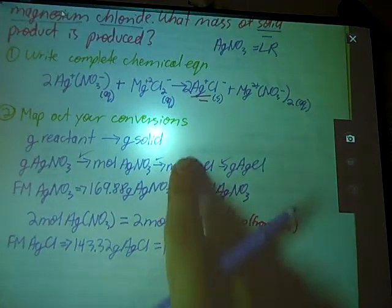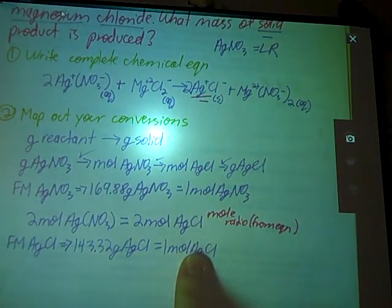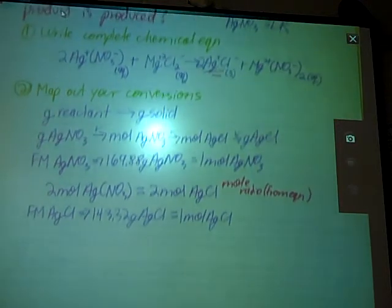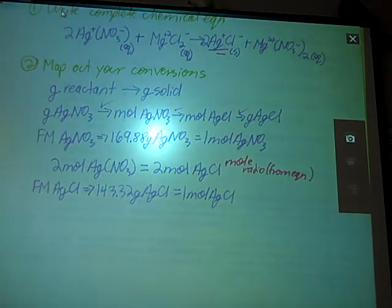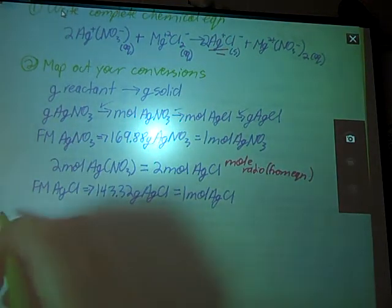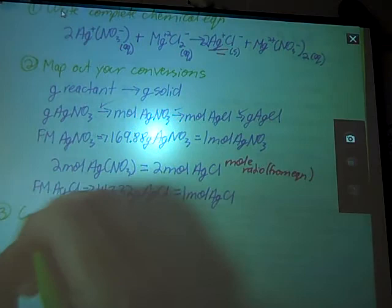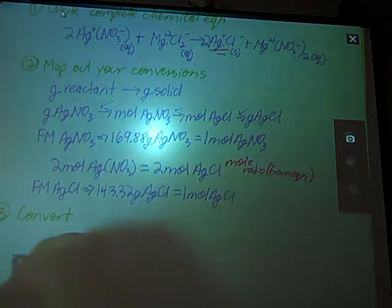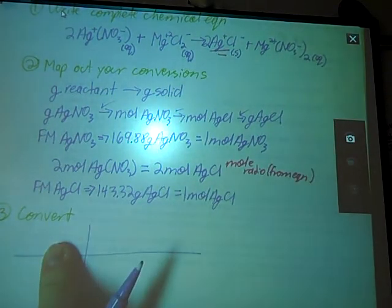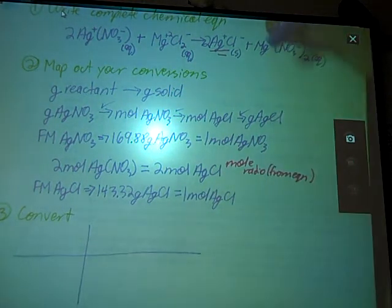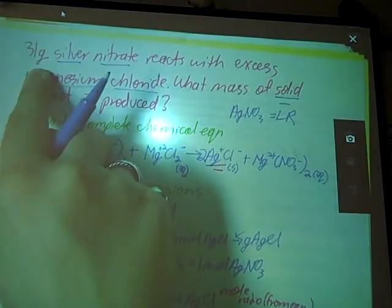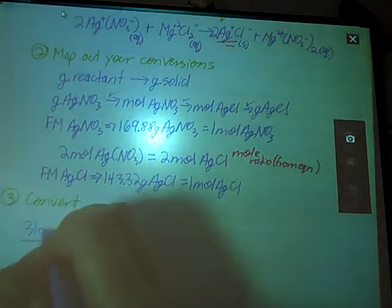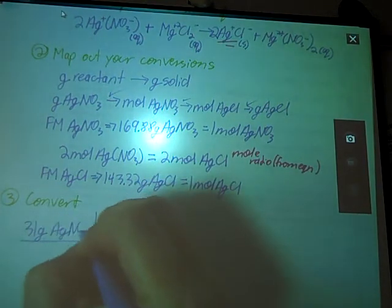So again, all of this mapping nonsense, you can start skipping that step later. But for now, it's a good idea just to help you set up those conversions as we move along. So since I've got all my conversion factors written out, now we're going to actually convert. We're going to put those into our boxes. So here we go. First box is the number they gave me from the problem. Seems like a long time ago, but there it is.